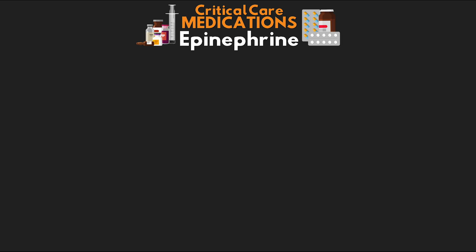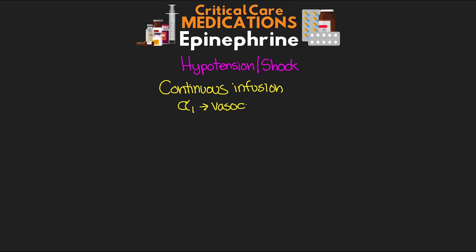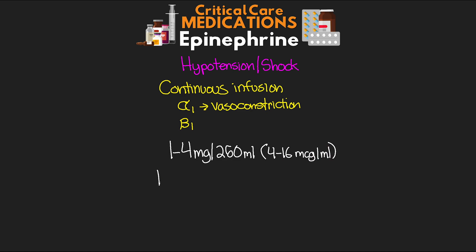Now let's talk about using epinephrine for hypotension and shock. For this, we're commonly going to use epinephrine as a continuous infusion, getting the benefit of our alpha-1 activation of vasoconstriction as well as potential benefits of our beta-1 activation. You're typically going to find this infusion in either 1-4 mg in 250 mL, which gives us a concentration of 4-16 mcg per mL. Our typical dosing on this infusion is going to go anywhere from 1-10 mcg per minute.